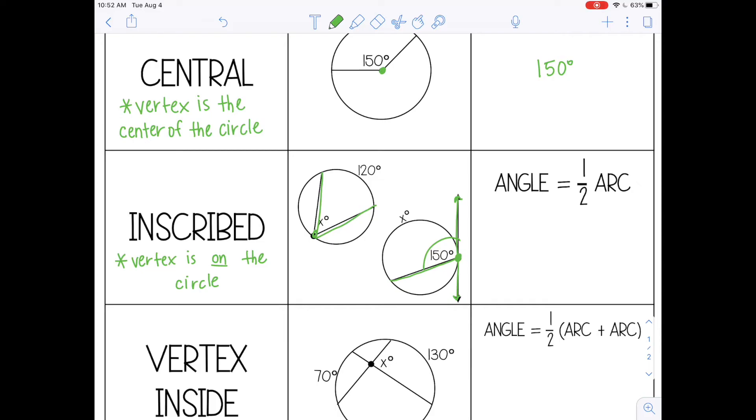So the formula for an inscribed angle is that the angle equals half the arc. So for example, in this first one,